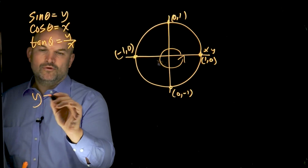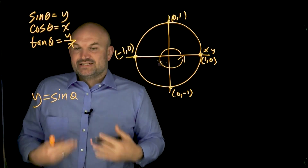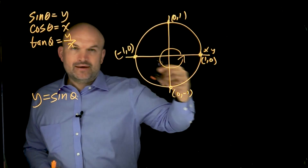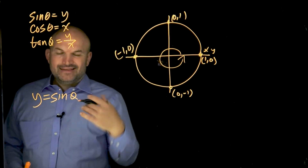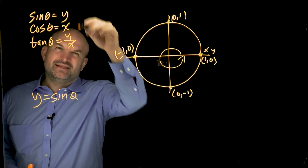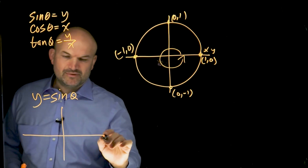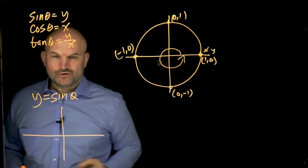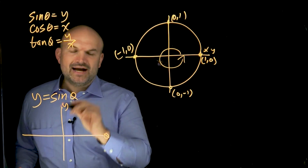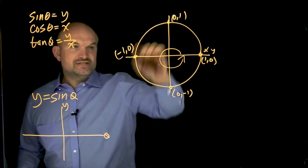So how are we going to graph Y equals sine of theta? Theta is going to represent the angle — the angles that make up the unit circle. I'm using theta instead of X as my input variable to avoid confusion with the X coordinate. So theta is my input variable and Y is my output variable.